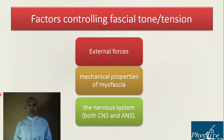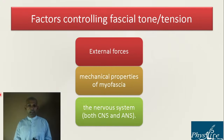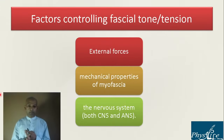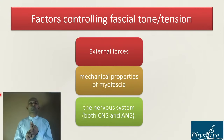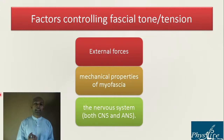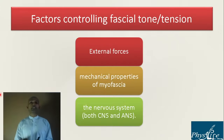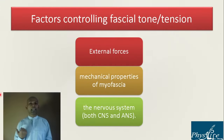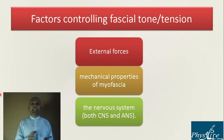What are the factors that control the fascial tone and tension of muscles? We have established that musculoskeletal problems — poor posture, poor movement, dysfunction — are related to the length-tension relationship of muscles. If muscles have a good length-tension relationship, posture and movement will be good. So what are the factors that change or control the tone and tension of the myofascia?